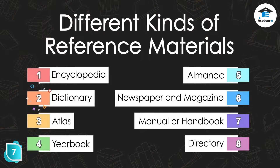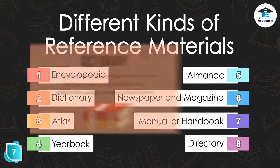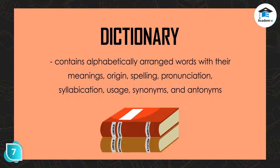The second reference material is the dictionary. This reference material contains alphabetically arranged words with their meanings, origin, spelling, pronunciation, syllabication, usage, synonyms, and antonyms.